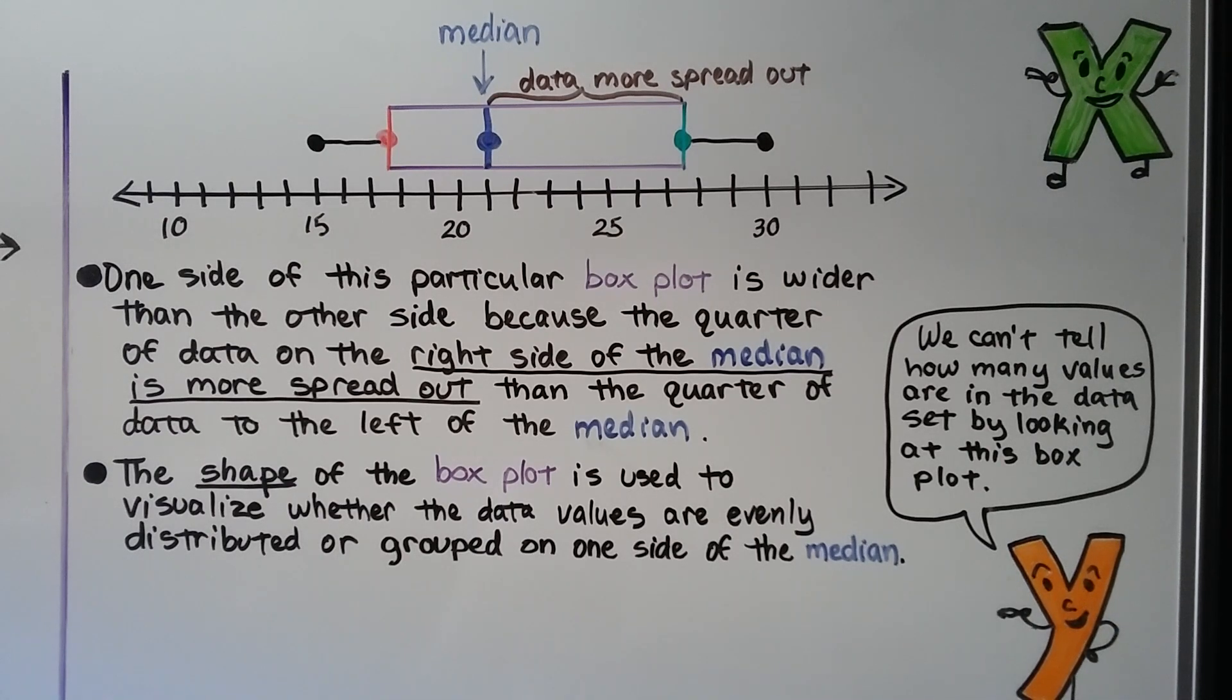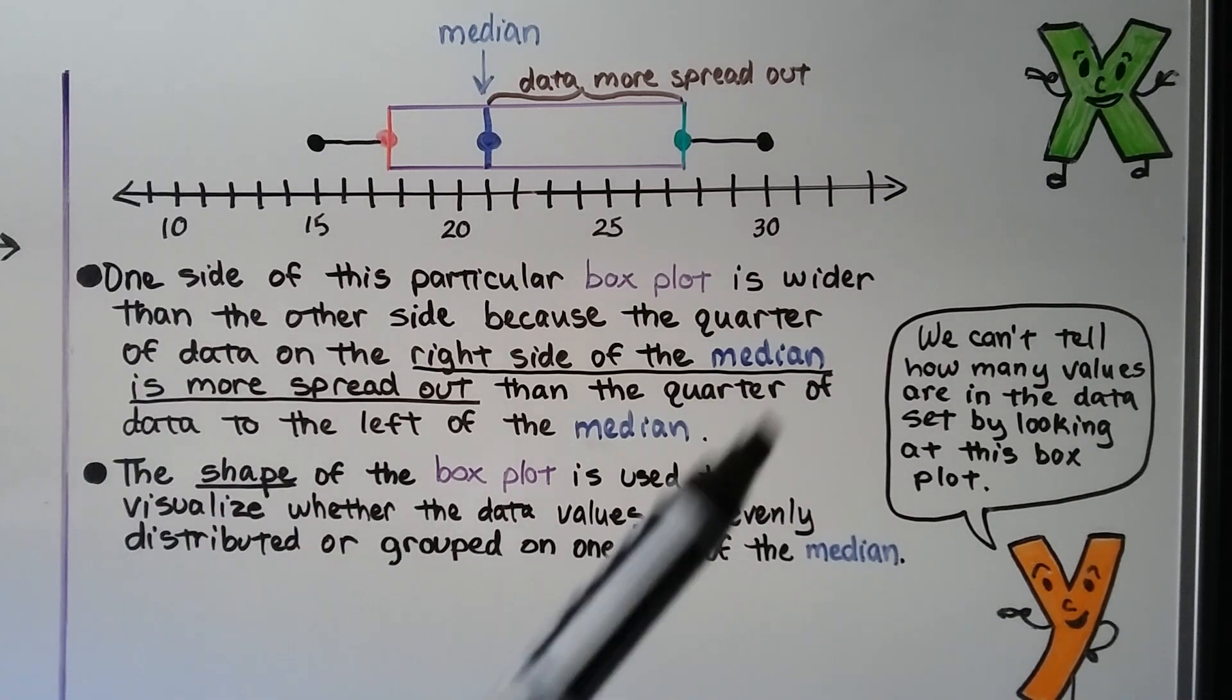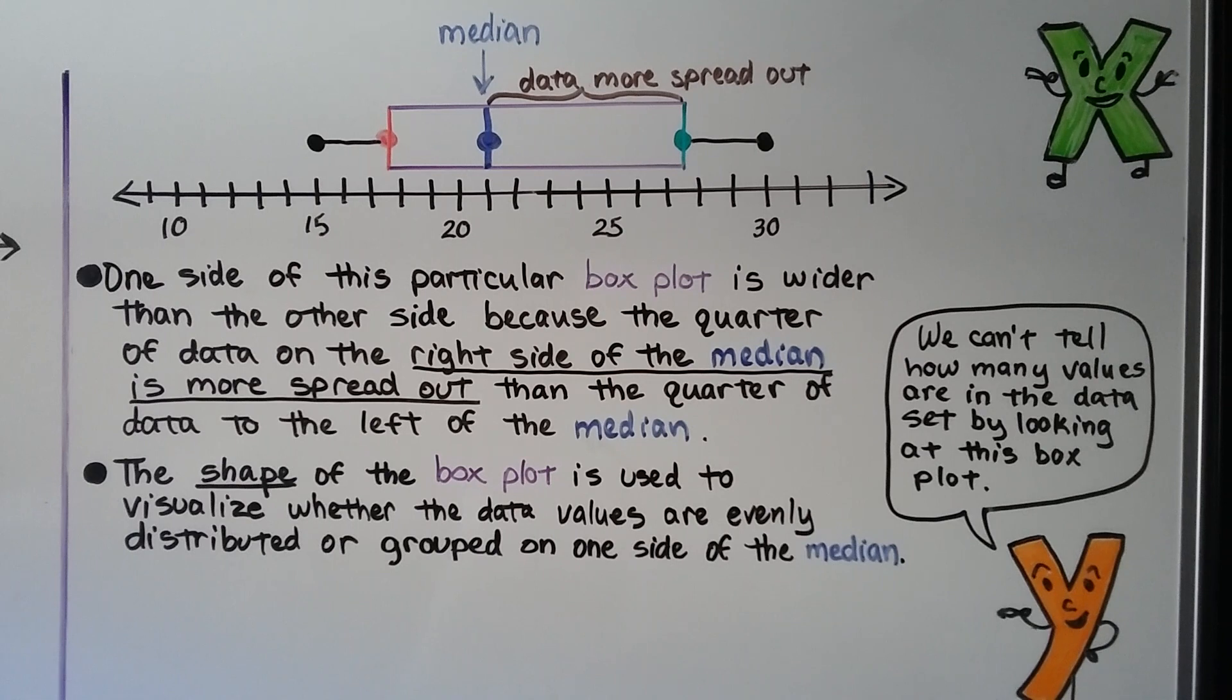We can't tell how many values are in the data set by looking at this box plot. But we know the lowest, the greatest, and the median, and the shape of the box plot is used to visualize whether the data values are evenly distributed or grouped on one side of the median.